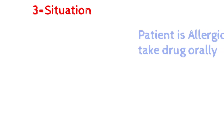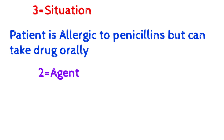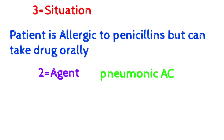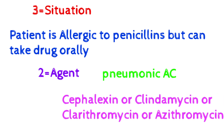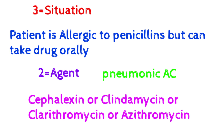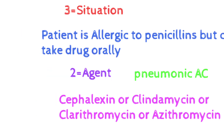Situation three: the patient is allergic to penicillin but can take the drug orally. The agent changes. Use the mnemonic 'AC' — like an air conditioner — where 'C' stands for cephalexin, clindamycin, and clarithromycin, and 'A' stands for azithromycin.